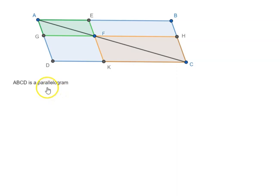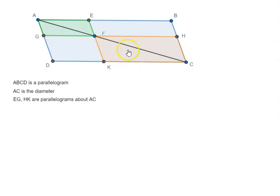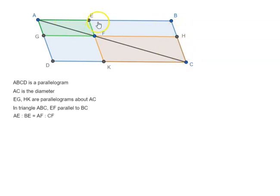We are given a parallelogram ABCD, and we know AC is the diameter, and we know EG and HK are the parallelograms about the diameter AC. In triangle ABC, EF is parallel to BC. Since they are parallel to each other in this triangle, that means AE is to BE as AF is to FC.